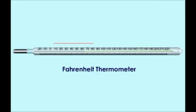The gap is divided into 100 parts in a Celsius scale thermometer, and in a Fahrenheit scale thermometer, the distance between the upper and lower fixed point is divided equally into 180 parts.